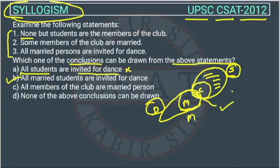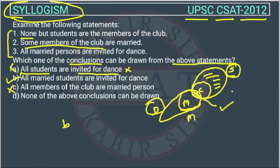Now let's check the third conclusion: all members of the club are married persons. This is wrong, because the second statement itself says only some members are married. So this conclusion is also wrong. Therefore, the answer will be option B — the answer of this question is option B.